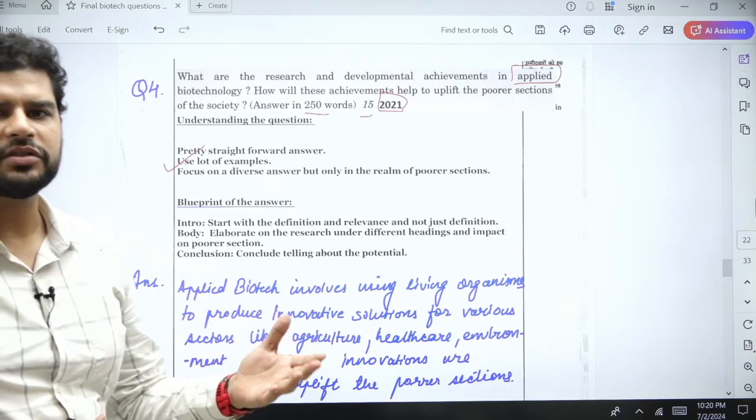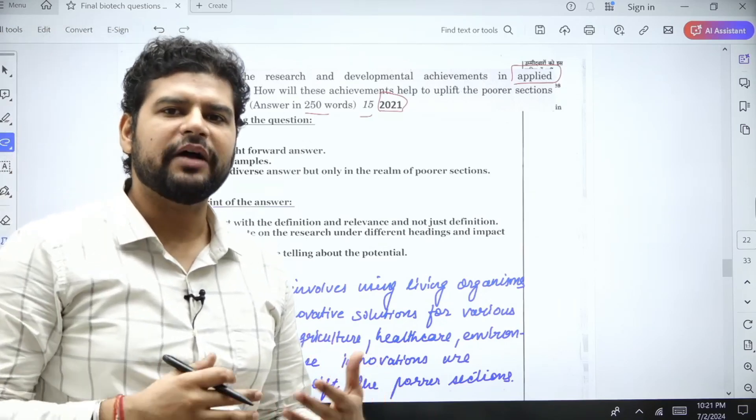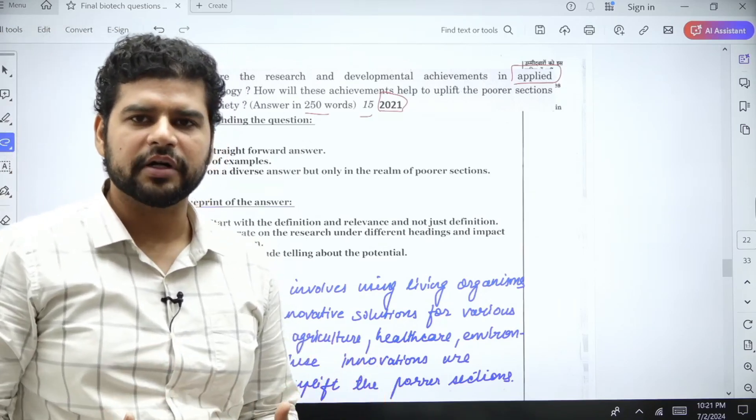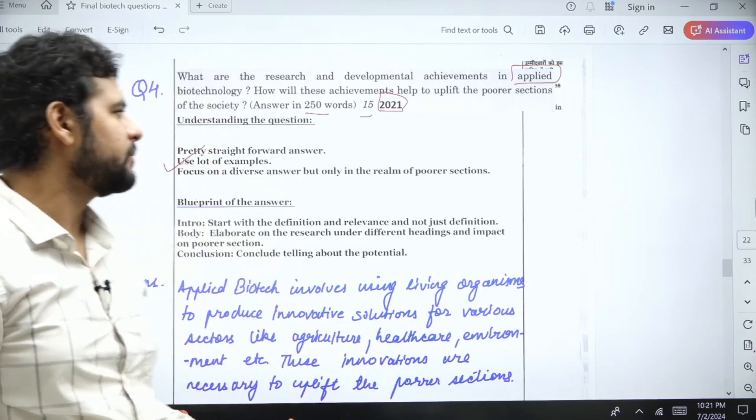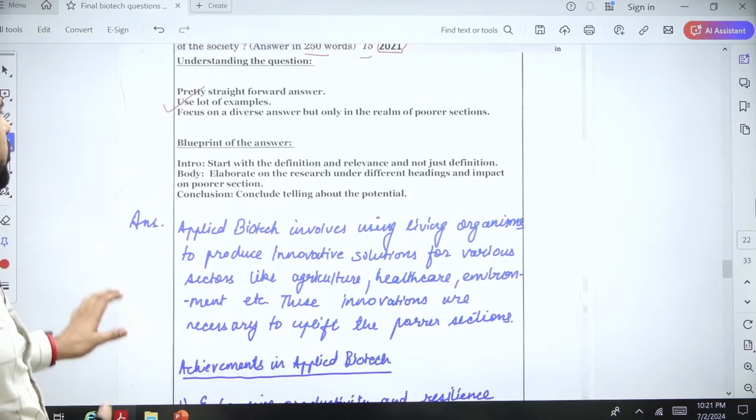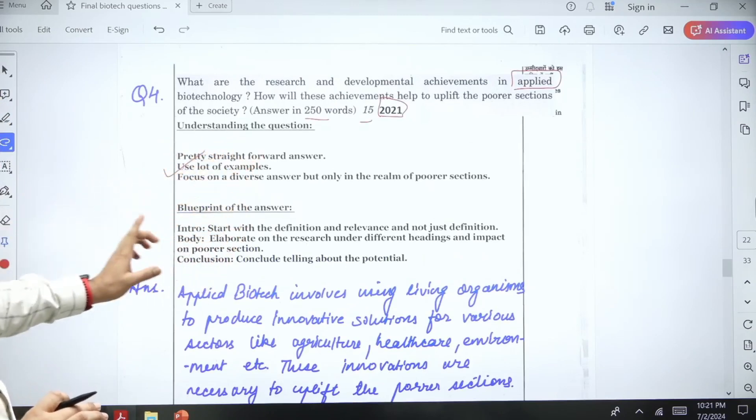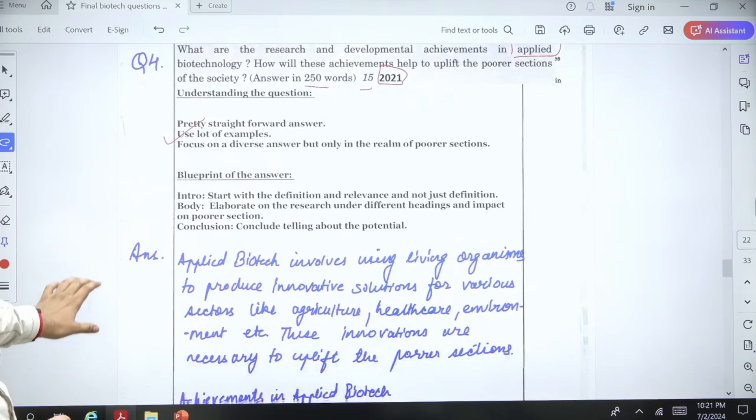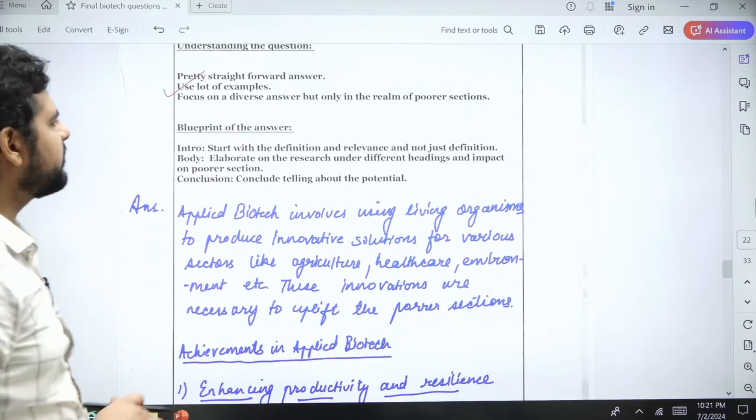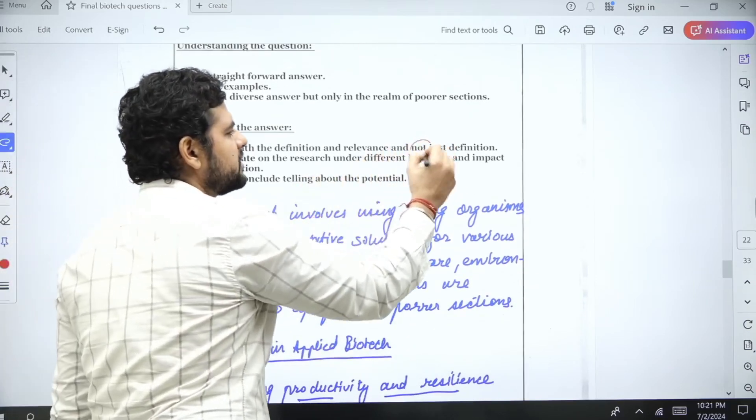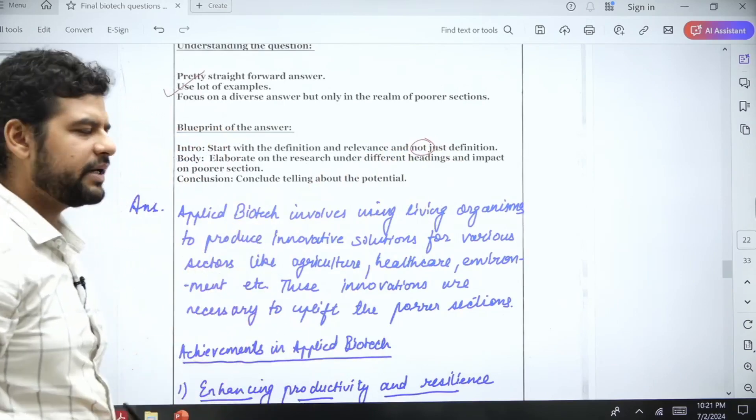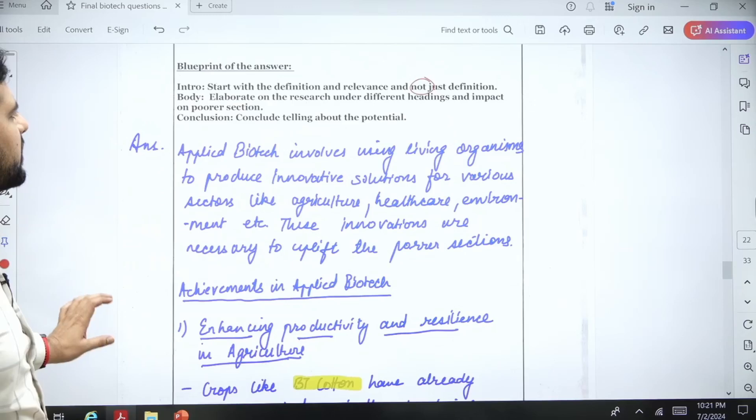You have to differentiate your content. Most hard-working people have almost similar content because they follow similar sources, but you have to put in your own effort to differentiate your content. Next, the blueprint: Let's start with the definition because the research and development achievements are asked.